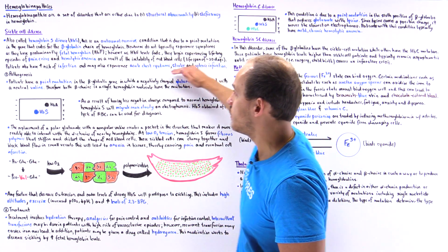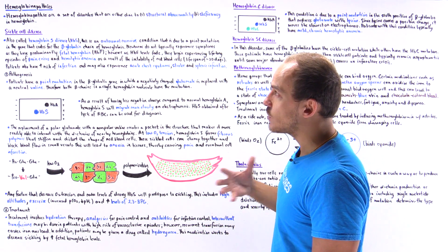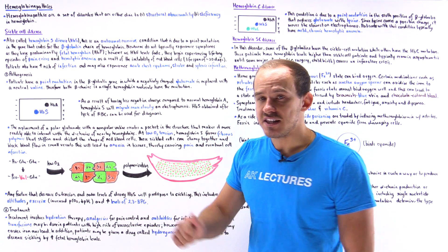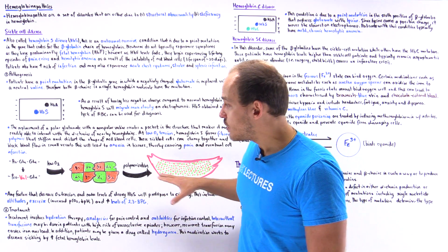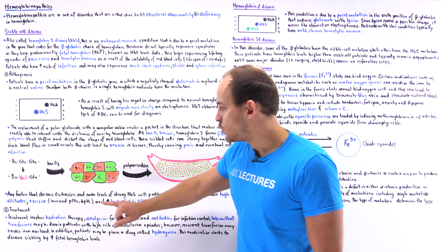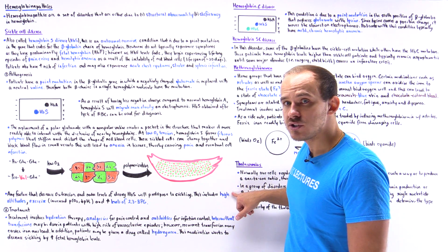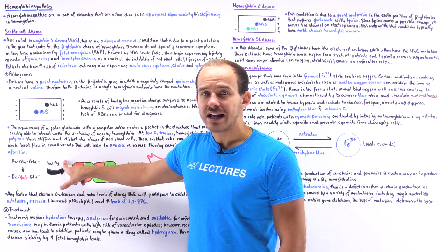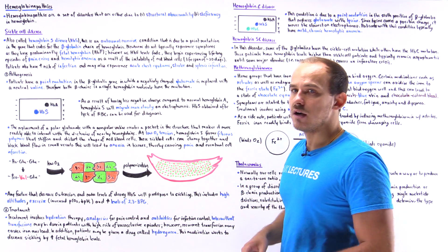This is exactly why we see all these symptoms in sickle cell disease. Generally speaking, anything that causes a low oxygen state will predispose the patient to sickling. Things like exercise — because we increase pCO2 and decrease pH — as well as elevated altitude, and increased levels of 2,3-BPG will cause a low O2 state and promote sickling.